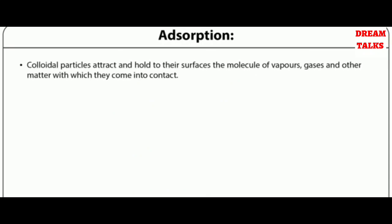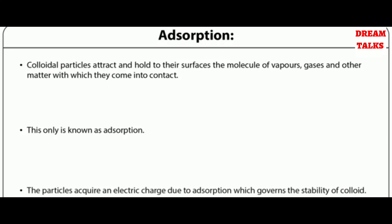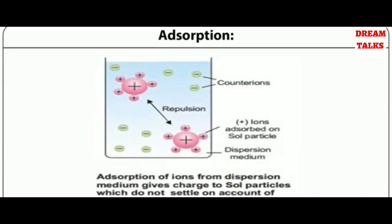Colloidal particles attract and hold to their surfaces the molecules of vapors, gases, and other matter with which they come in contact — this is known as adsorption. The particles acquire an electric charge due to adsorption, which governs the stability of the colloid. Ions adsorbed on the colloidal particles are responsible for the electric charges of those particles.